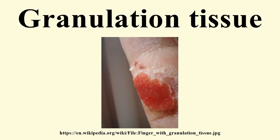The main immune cells active in the tissue are macrophages and neutrophils, although other leukocytes are also present. These work to phagocytize old or damaged tissue and protect the healing tissue from pathogenic infection. This is necessary both to aid the healing process and to protect against invading pathogens, as the wound often does not have an effective skin barrier to act as a first line of defense.